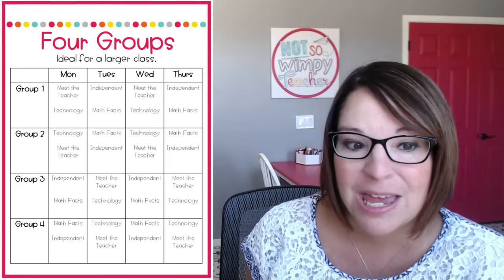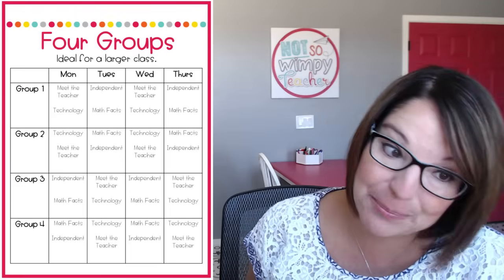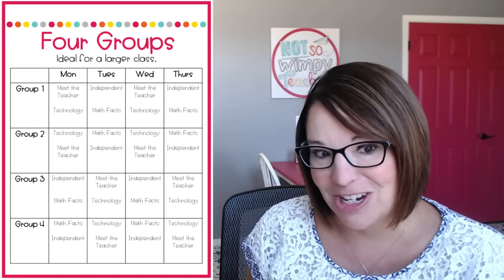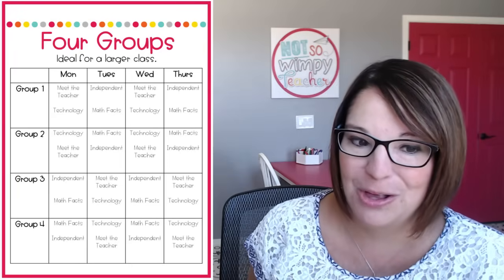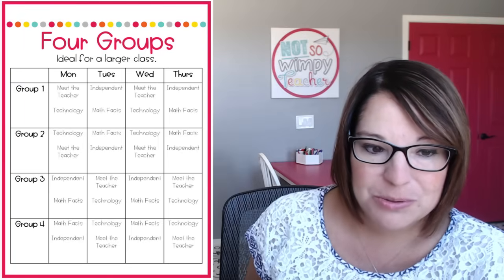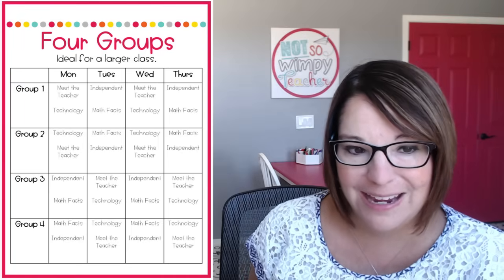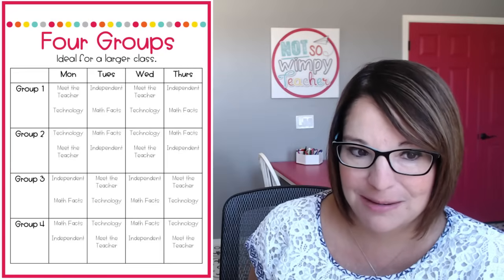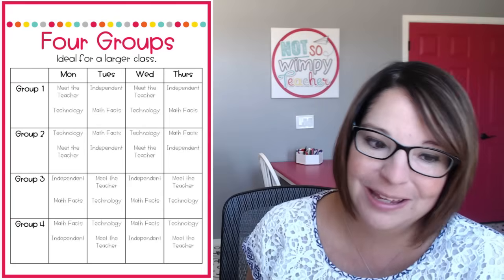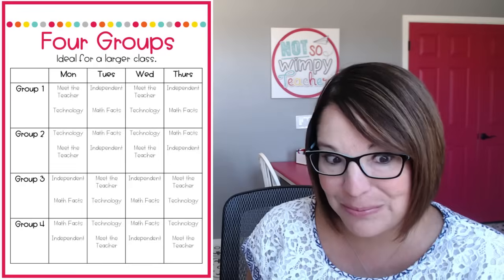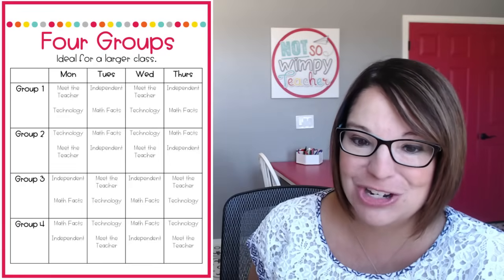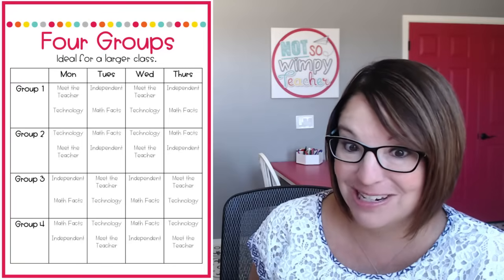Group two does pretty much the opposite of group one — they have the same centers on Monday but in reverse order. First they go to technology, then they come meet with me in small group. On Tuesdays, they'd first go to math facts, then have independent. Groups three and four flip-flop what groups one and two do — they do on Tuesday what groups one and two do on Monday. You can go ahead and screenshot this schedule in case it's one you might want to consider.